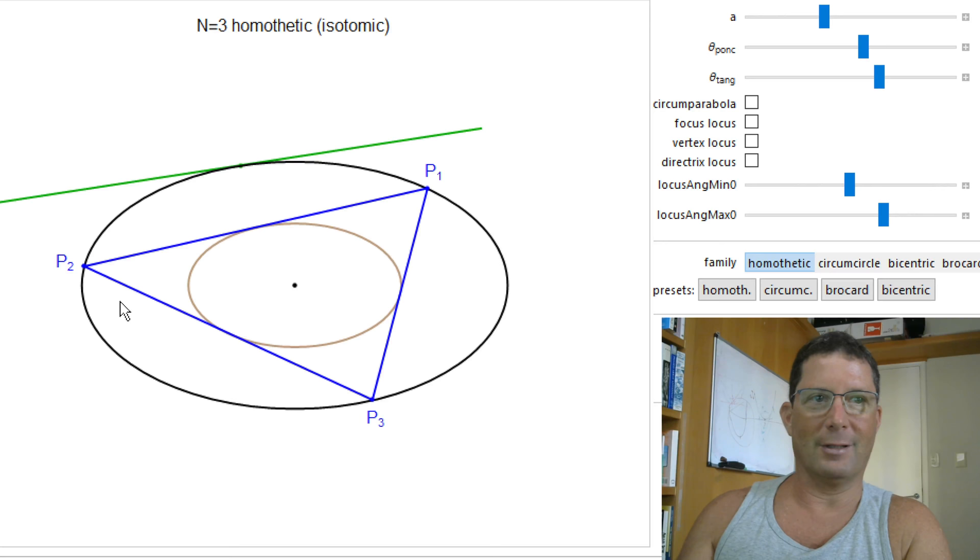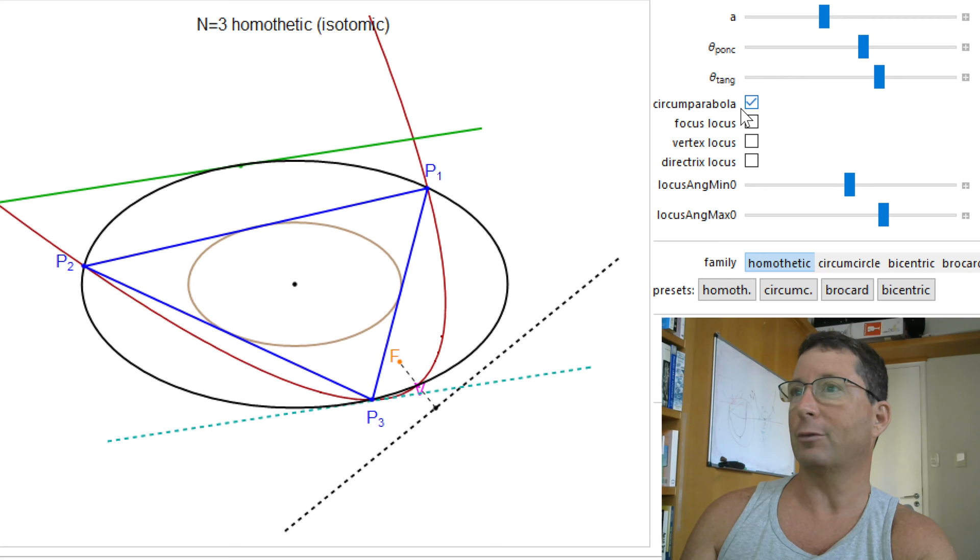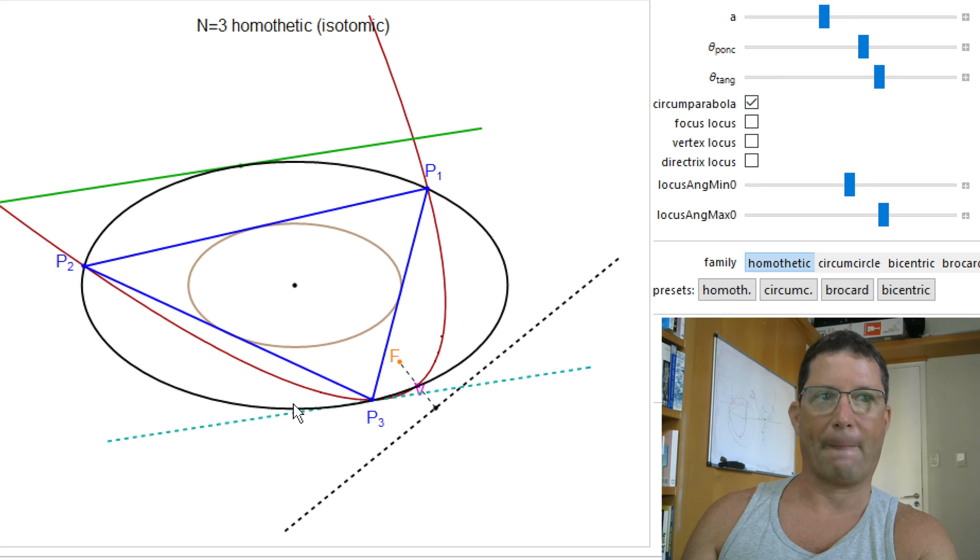Hello, guys. So we're going to keep talking about parabolas and circumparabolas. What is a circumparabola to a triangle? A circumparabola to a triangle is a parabola that passes through the three vertices.